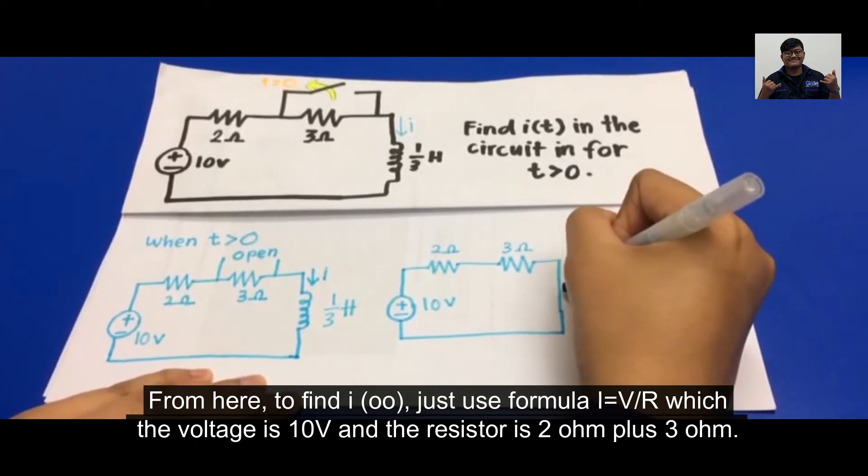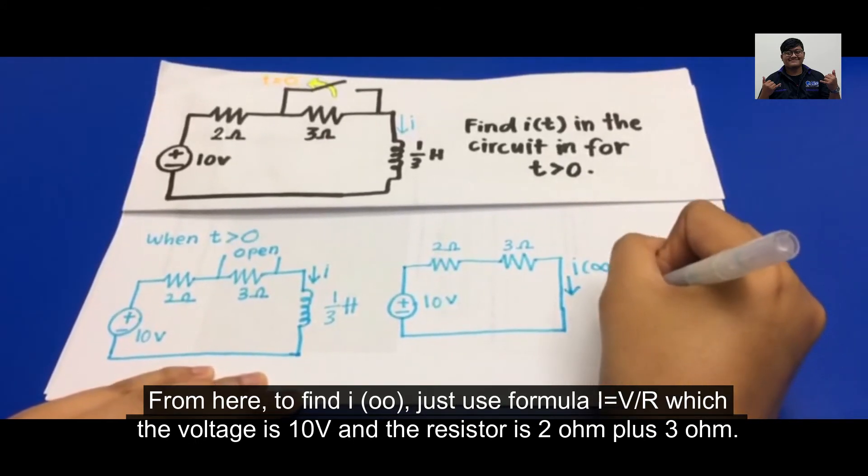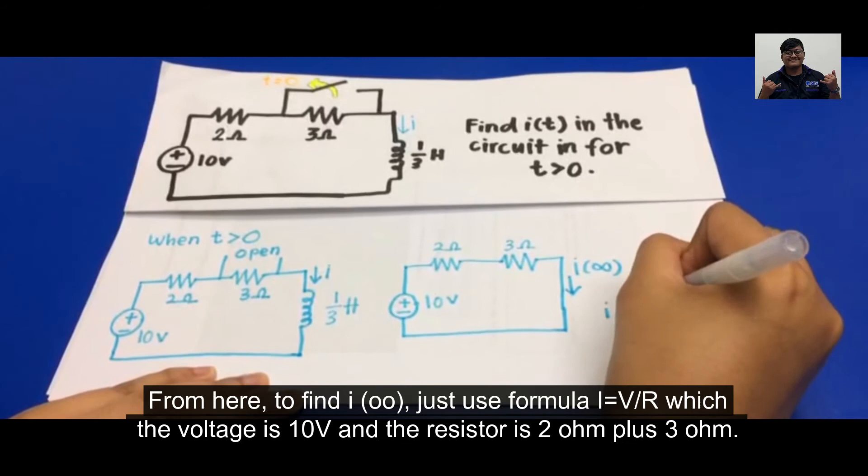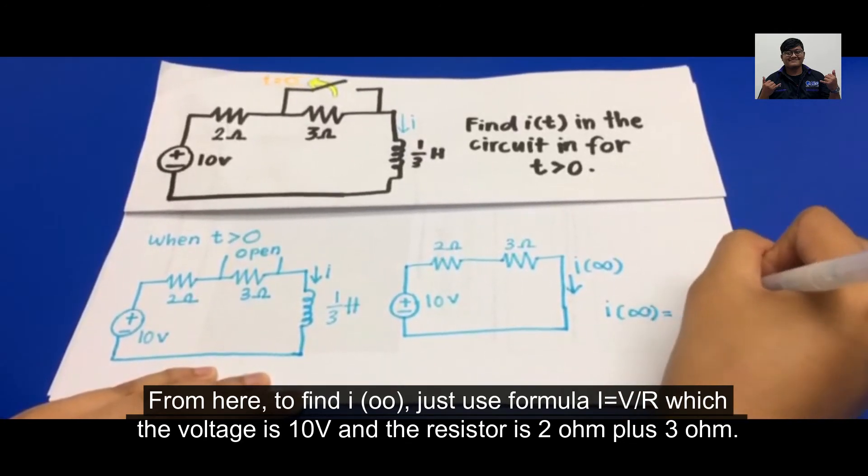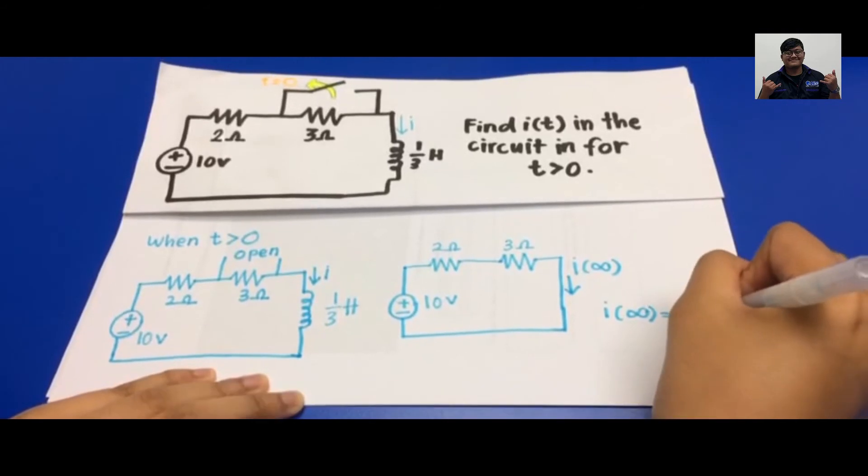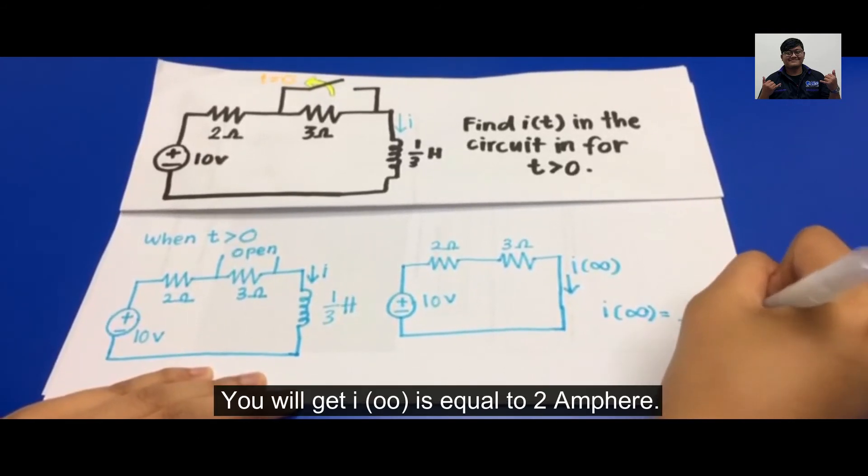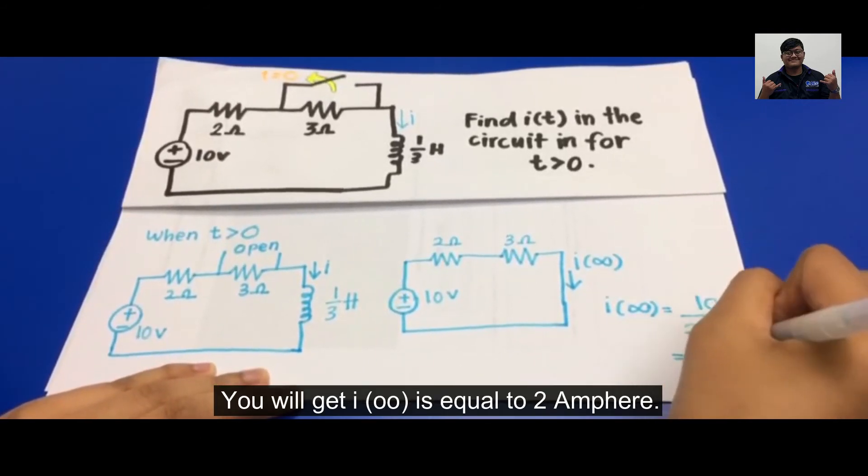From here, to find i-infinity, just use the formula I equals V over R, which the voltage is 10 volts, and the resistor is 2 ohms plus 3 ohms. You will get i-infinity is equal to 2 amperes.